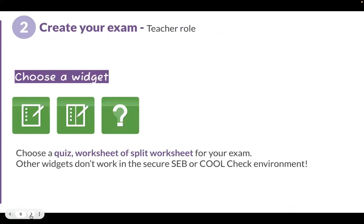When it comes to BookWidgets and what type of widget you should choose out of our 40+ widgets, the ones you want to use specifically for an exam are the worksheet, the split worksheet, or the quiz. These three widget types will work in both Safe Exam Browser and Cool Check, and they have additional functionality that makes it easy to create and administer your exam.